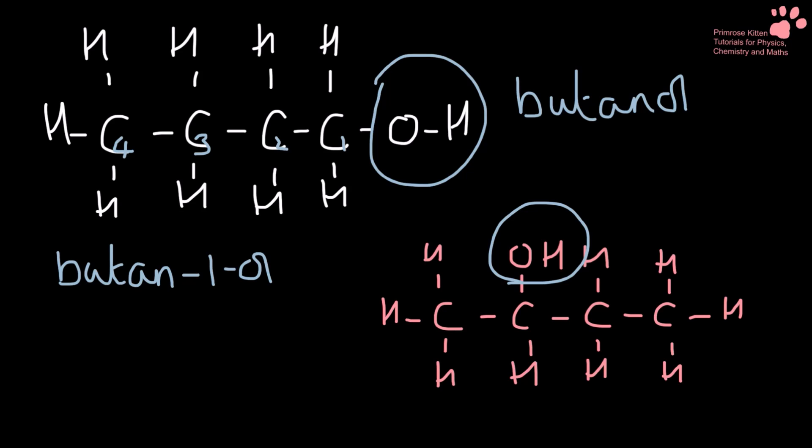We did the same with the second one, one, two, three, four. The alcohol is now on carbon number two. So that is butan-2-ol.